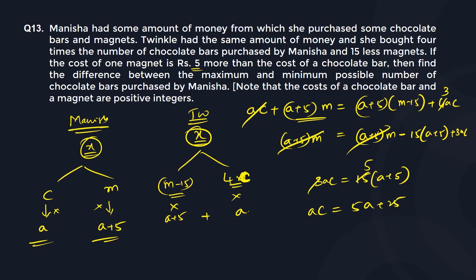Now note that the cost of chocolate bar and magnet are positive integers, so the value of a is an integer, and therefore a plus 5 will also be an integer. The question asks: find the difference between the maximum and minimum possible number of chocolate bars. So c is equal to (5a plus 25) divided by a, which is 5 plus 25 over a.